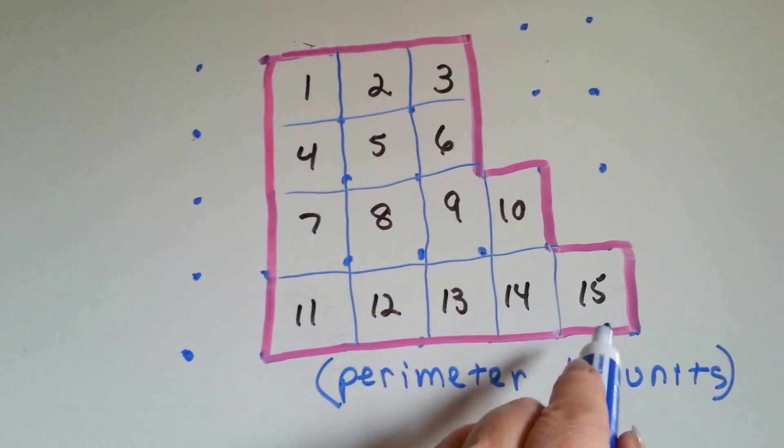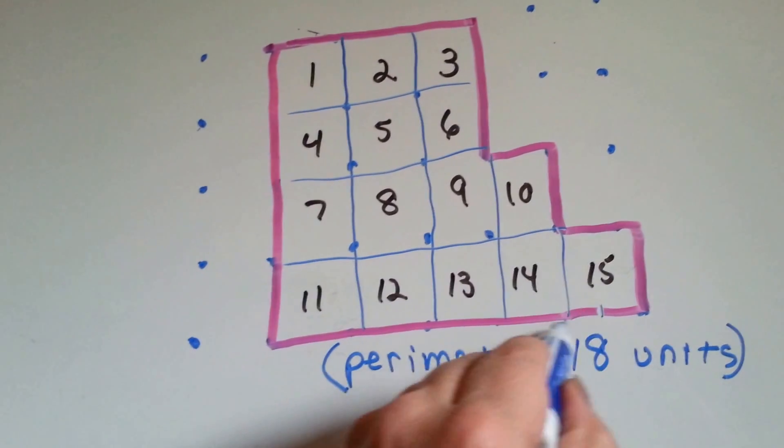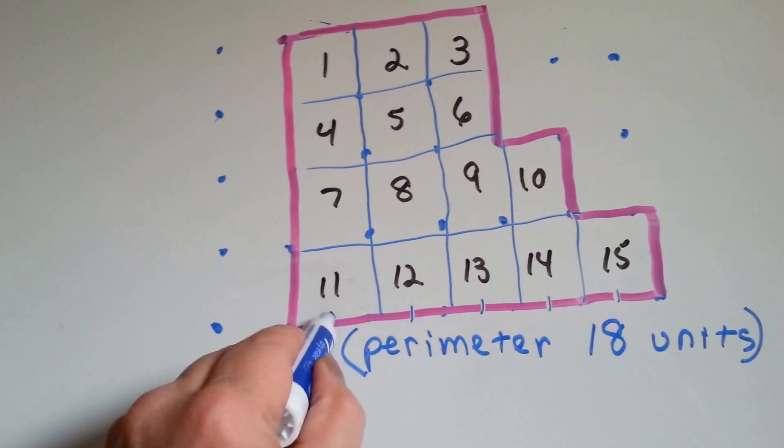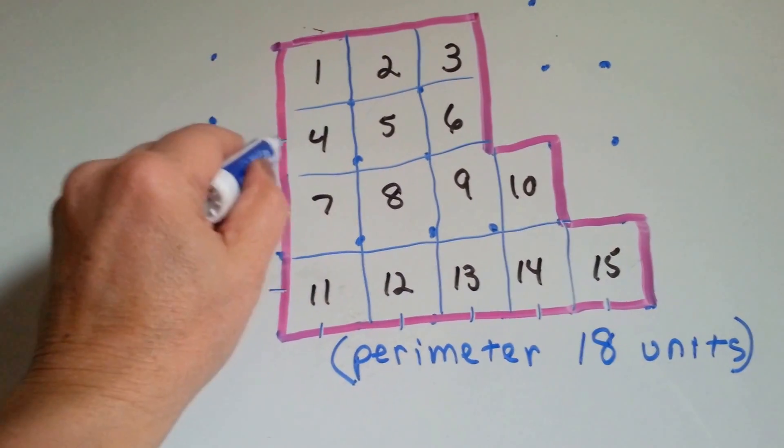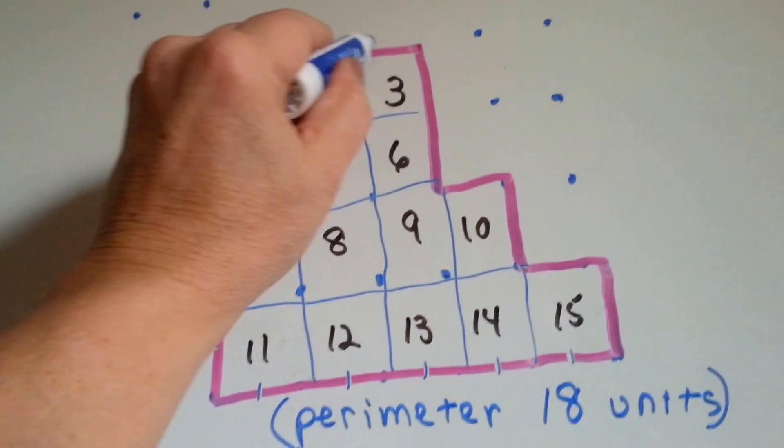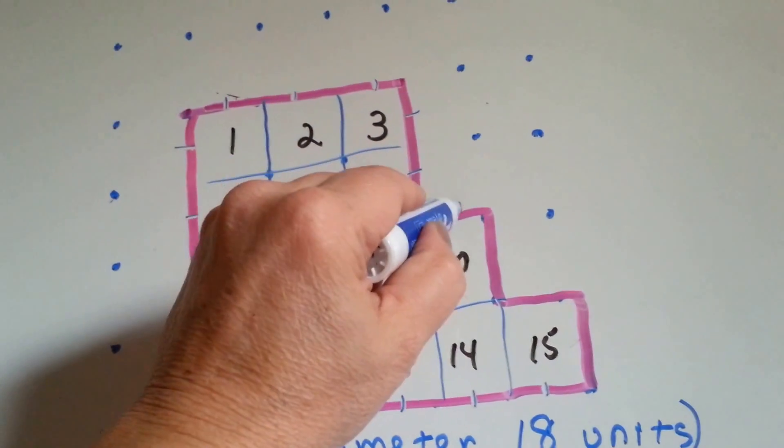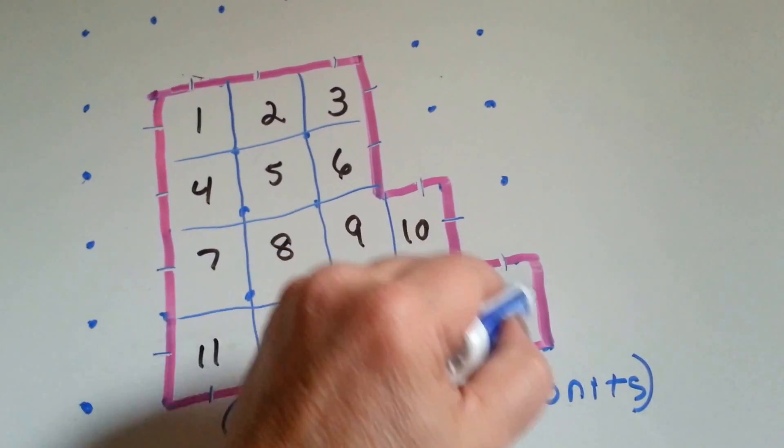So let's start counting right here. We got one, two, three, four, five, six, seven, eight, nine, ten, eleven, twelve, thirteen, fourteen, fifteen, sixteen, seventeen, eighteen.